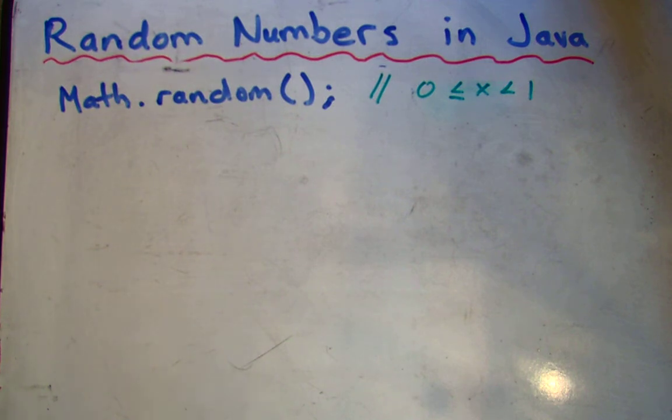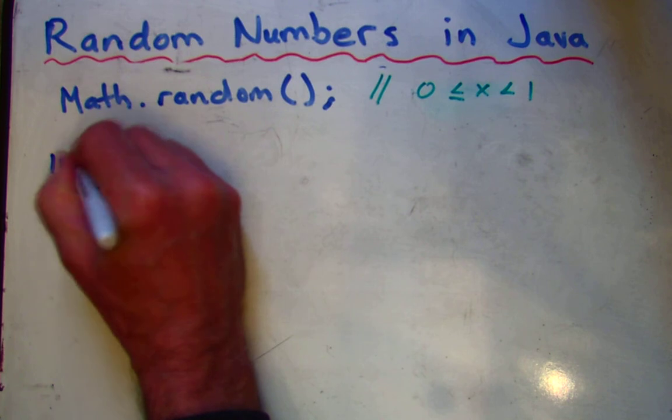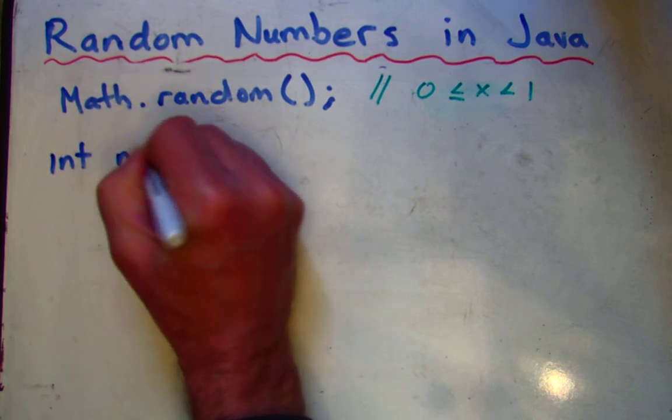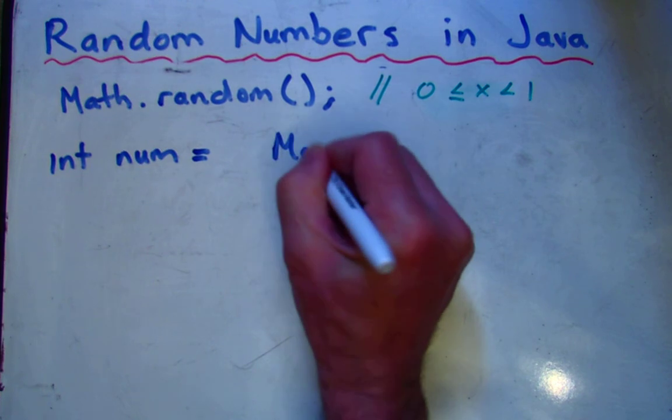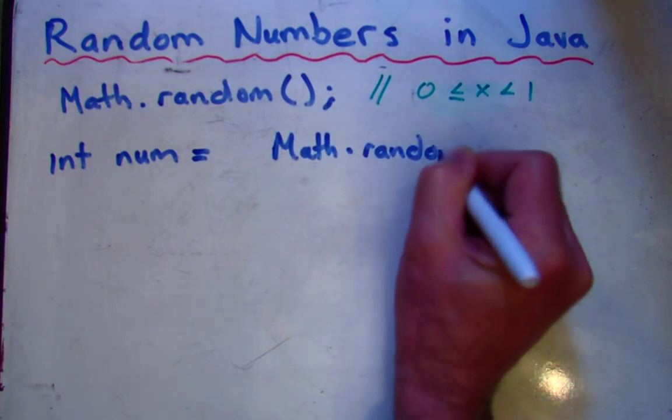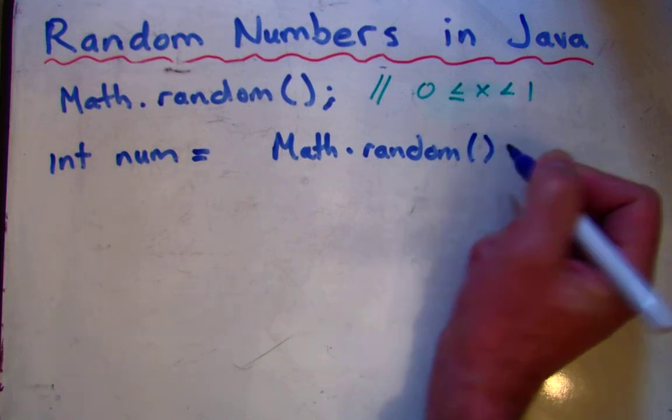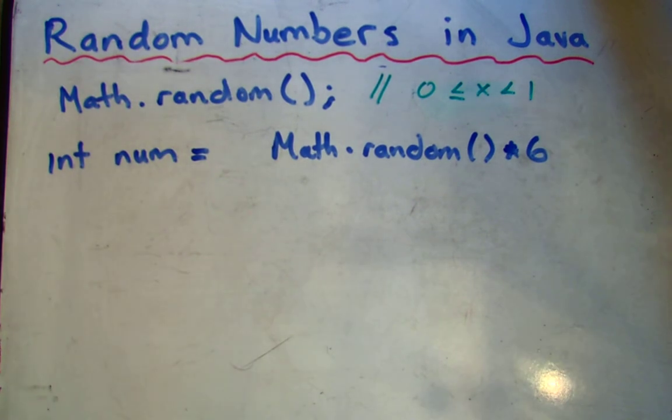So how would we use this to create an integer? What we could do is we have an integer called num, and we want to set it equal to Math.random, which is 0 to 1 not inclusive. If we multiply it by 6, let's say we want to do a number between 1 and 6, so we could multiply by 6.